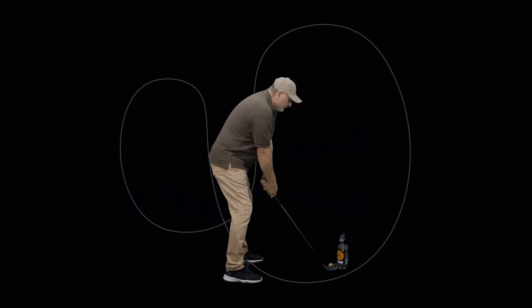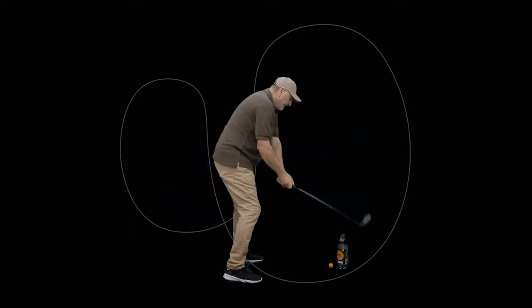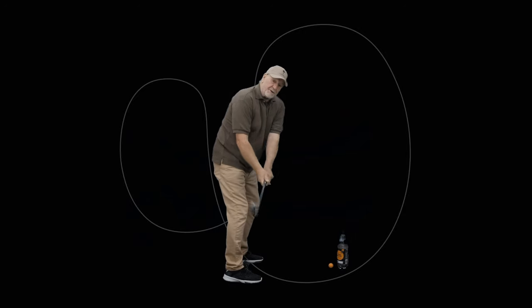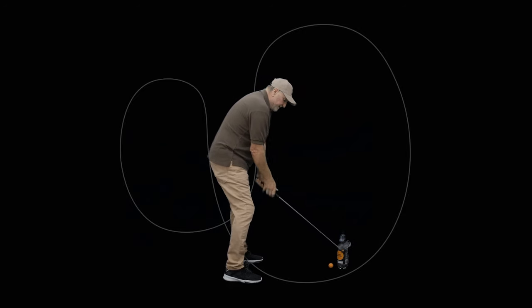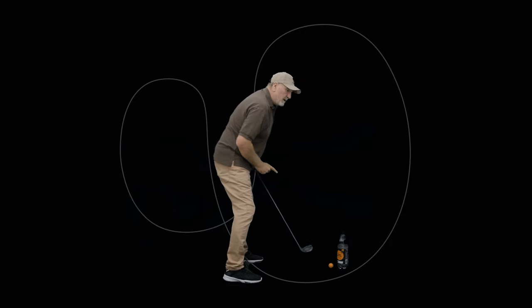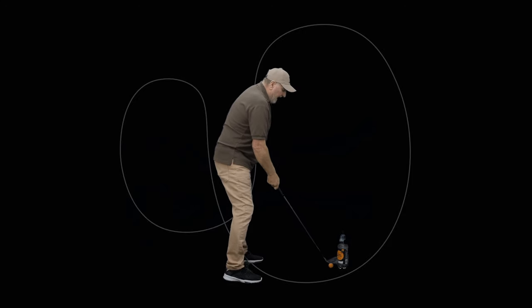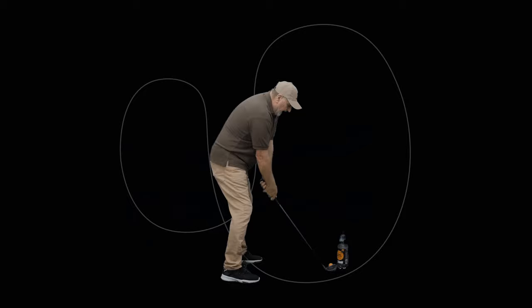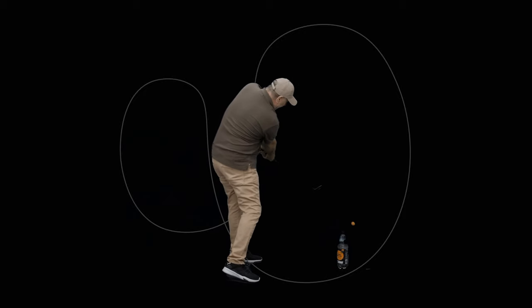Because what happens is, when most people come to shank it, what they do is they swing from an outside position. And as soon as we go from an outside position, the hosel of the club is being promoted forward. So having this bottle here allows us to swing inside that.